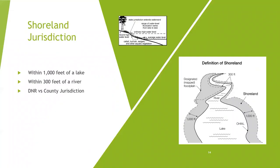Shoreland rules come into play within a thousand feet of a lake with a public water body and within 300 feet of a river classified by the DNR as a public water course. The DNR has jurisdiction below the ordinary high water level, which is an elevation set by the DNR based on indications left on the landscape — generally vegetation on basins and lakes. Above the ordinary high water level is within the shoreland overlay district, which is the county's jurisdiction.